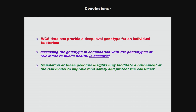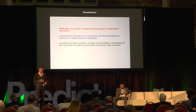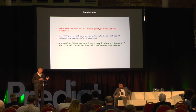To conclude: whole genome sequencing data gives us a deep look into the workings — the blueprint — of an individual bacterium, and we could do this for any organism. When you assess genotype in combination with phenotype, it's essential we prove that connection, using models like the zebrafish model to infer it. For the food industry going forward, if we're able to translate these genomic insights, we may facilitate a refinement of risk assessment models that could help improve food safety measures that companies like Nestlé and others around the world are implementing, and also protect the consumer. If we can do this, we may also be able to use this refined model to help feed the world in 2050 when the population doubles. Thank you very much.